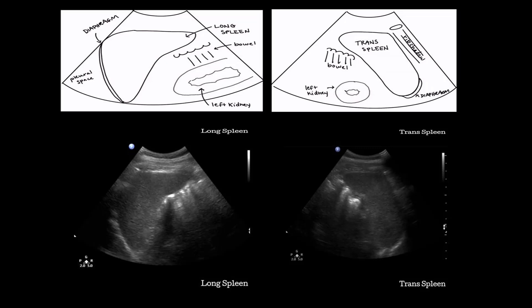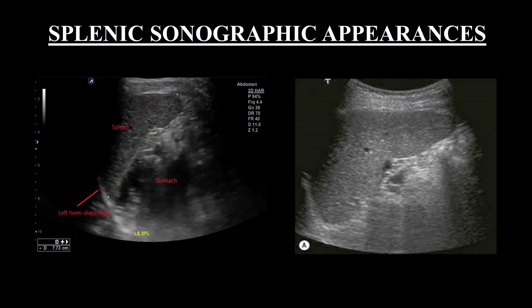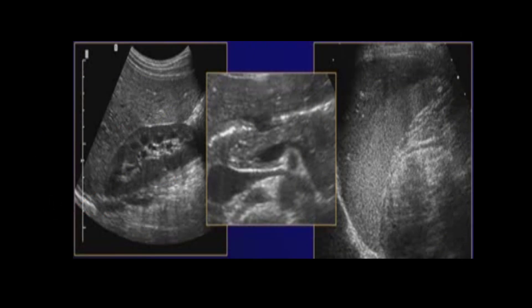In the transverse section, rib shadowing can appear in certain areas, along with part of the bowel loop, and the left kidney at this area. The spleen's sonographic appearance is homogeneous, moderately echogenic, with less visible vessels than the liver. The spleen echogenicity is slightly more than the liver, and it could be equal to or less than the pancreas, and more echogenic than the renal cortex.